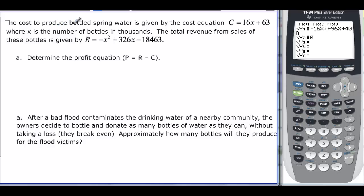Cost to produce bottled spring water is given by the cost equation C equals 16x plus 63, where x is the number of bottles in thousands. And the total revenue from the sales of these bottles is given by this equation. So determine the profit equation.